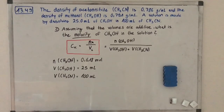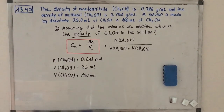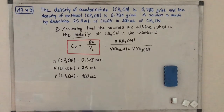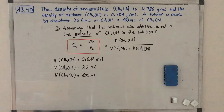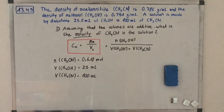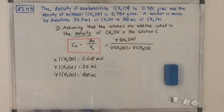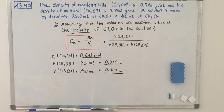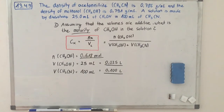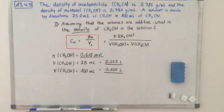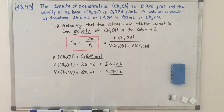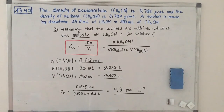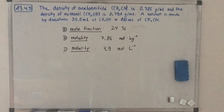We already have all the components. The number of moles of methanol is 0.618 mol, and the volumes are given in the task: 25 mL of methanol and 100 mL of acetonitrile. Converting to liters: 0.025 L and 0.1 L. Inserting into the formula gives our final result: 4.9 mol per liter.